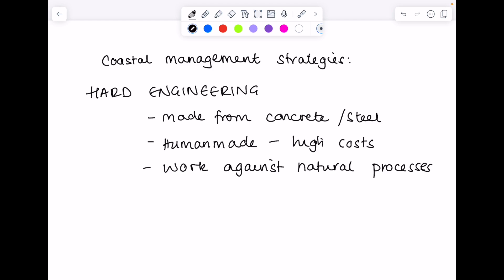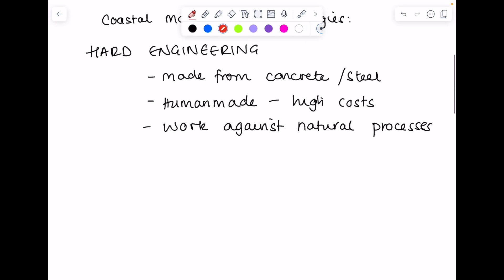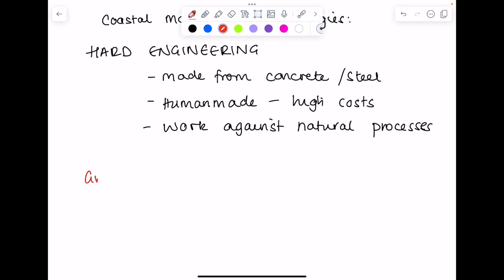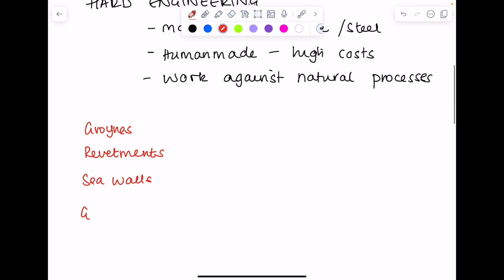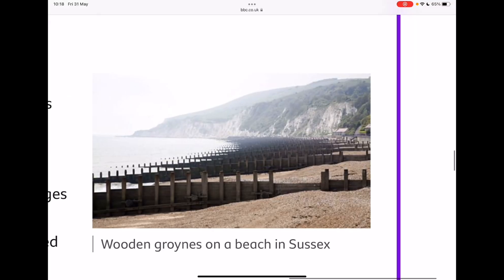The examples of hard engineering strategies I'm going to take you through include groins, revetments, sea walls, gabions, and riprap. These are all examples of hard engineering strategies. So here I am on the BBC Bitesize website.